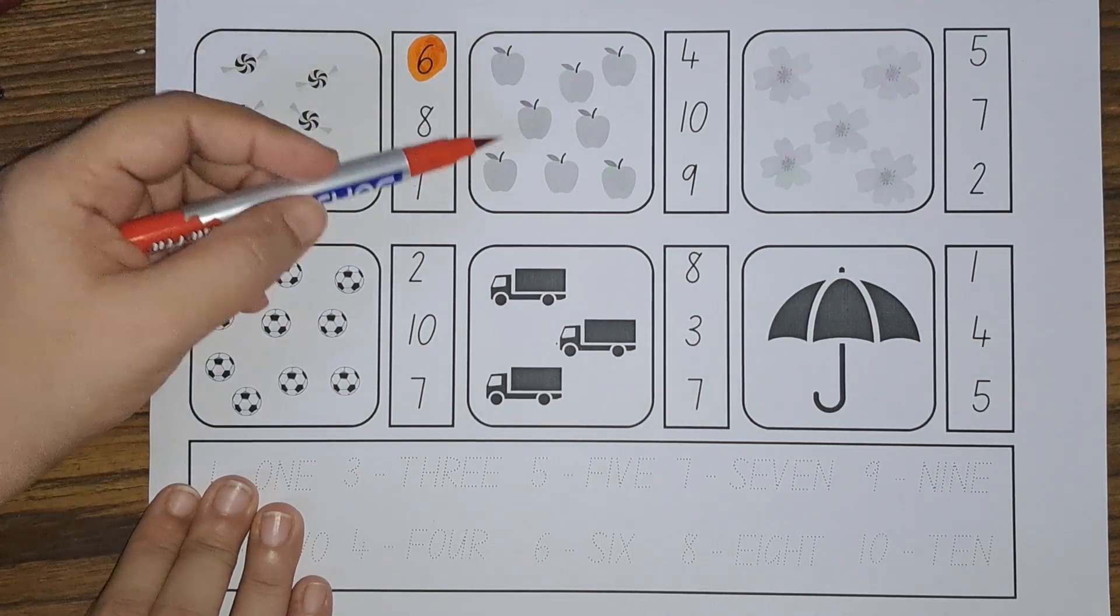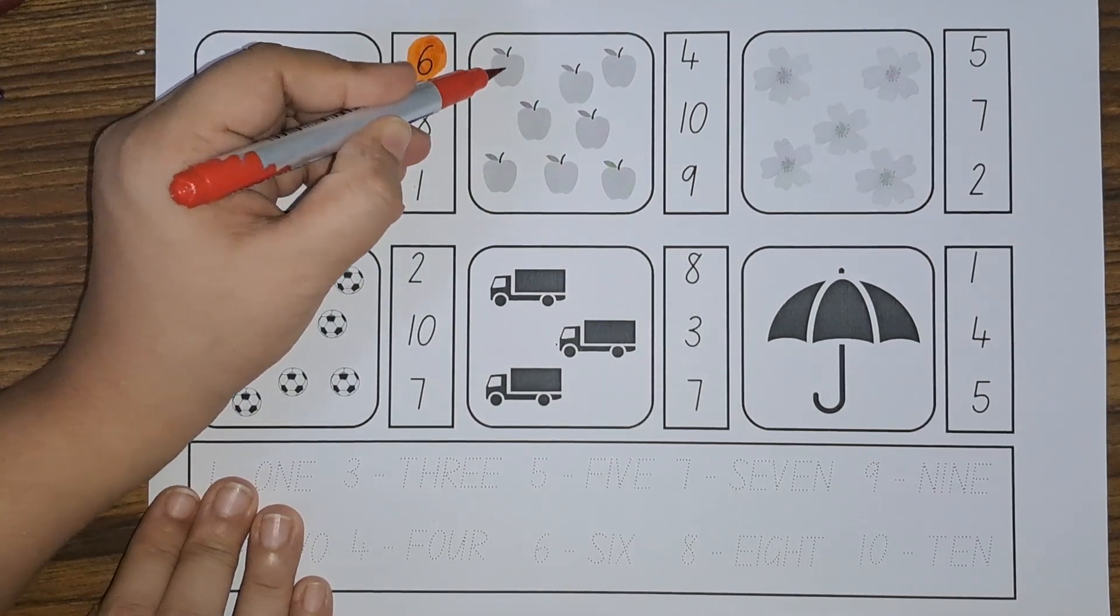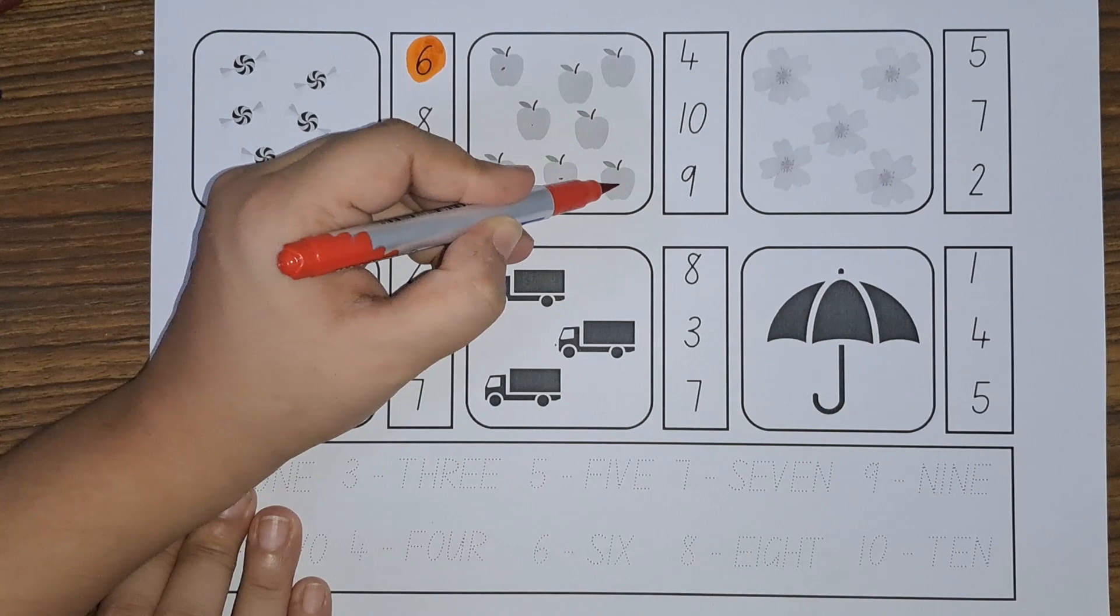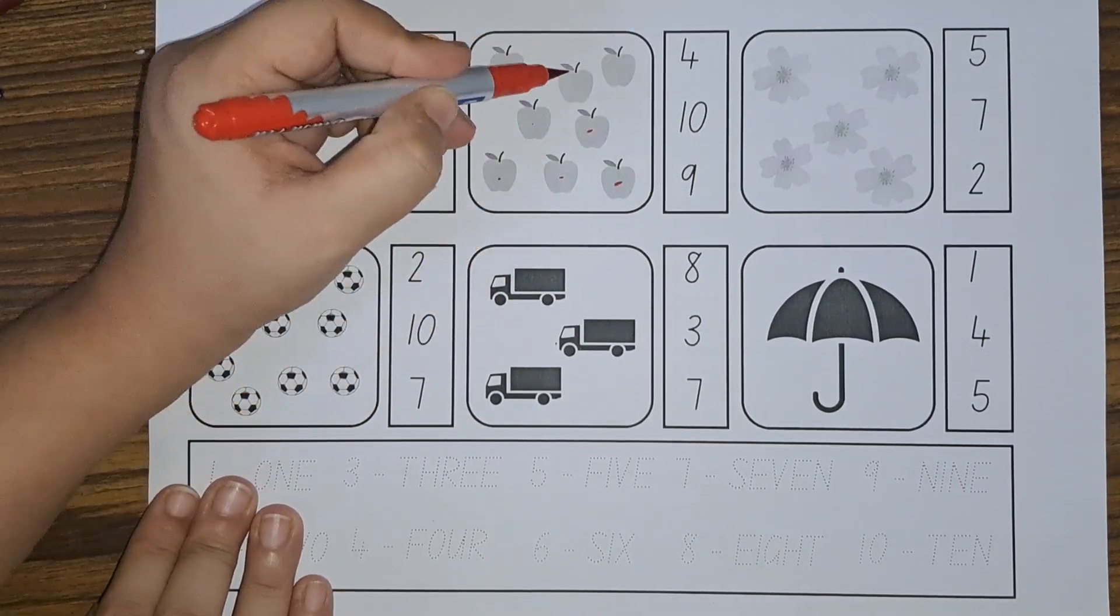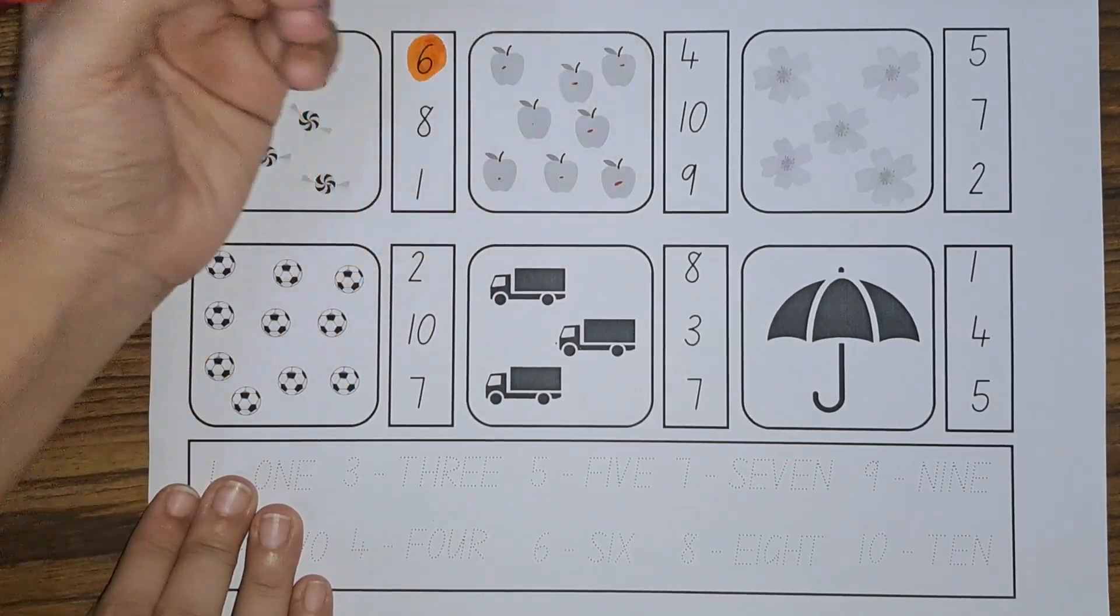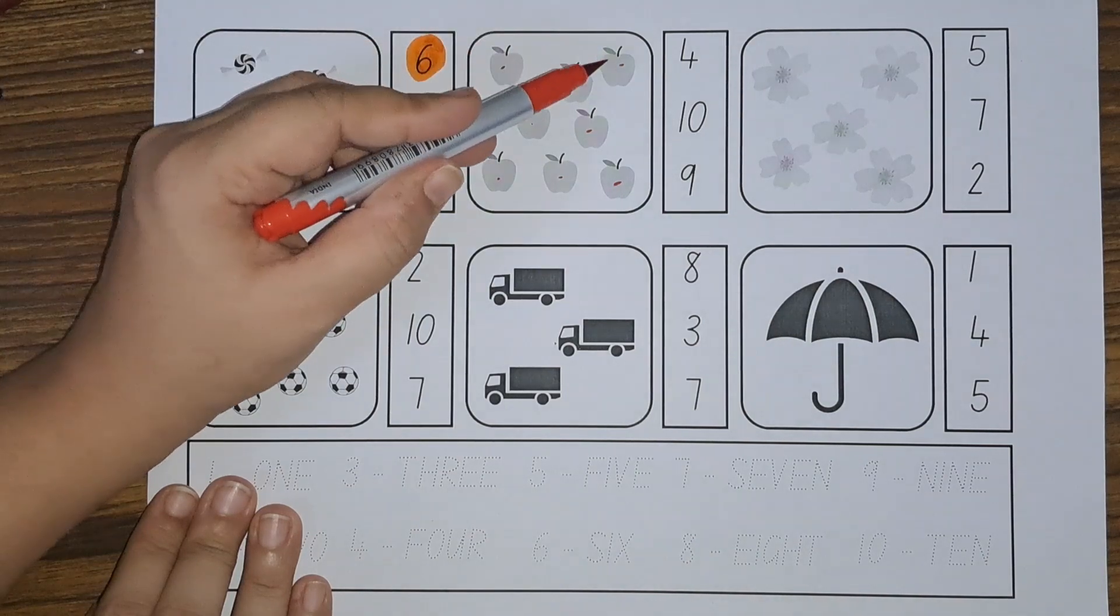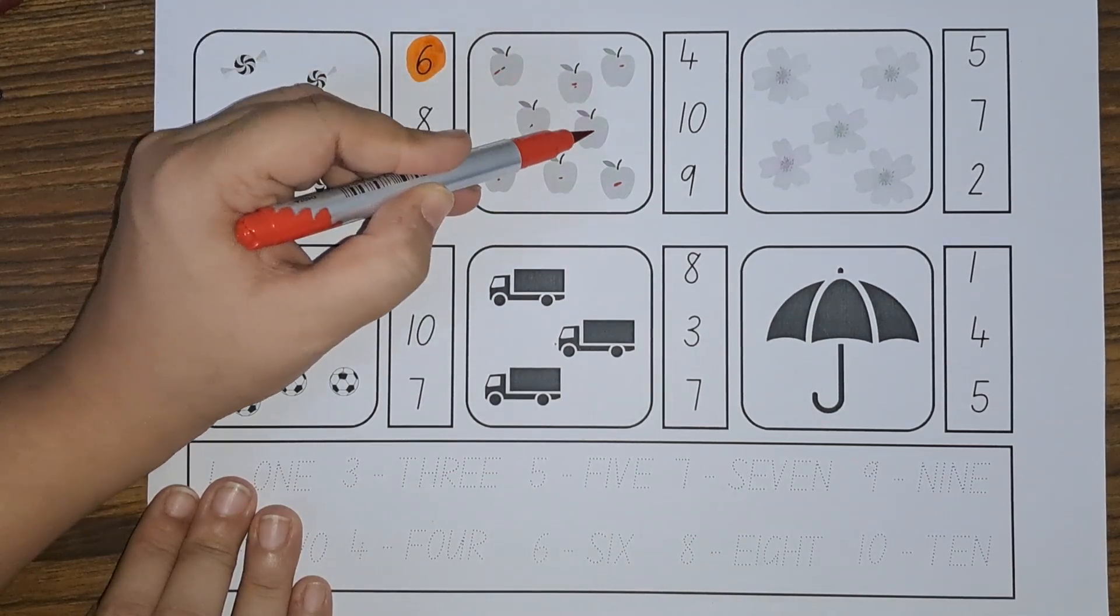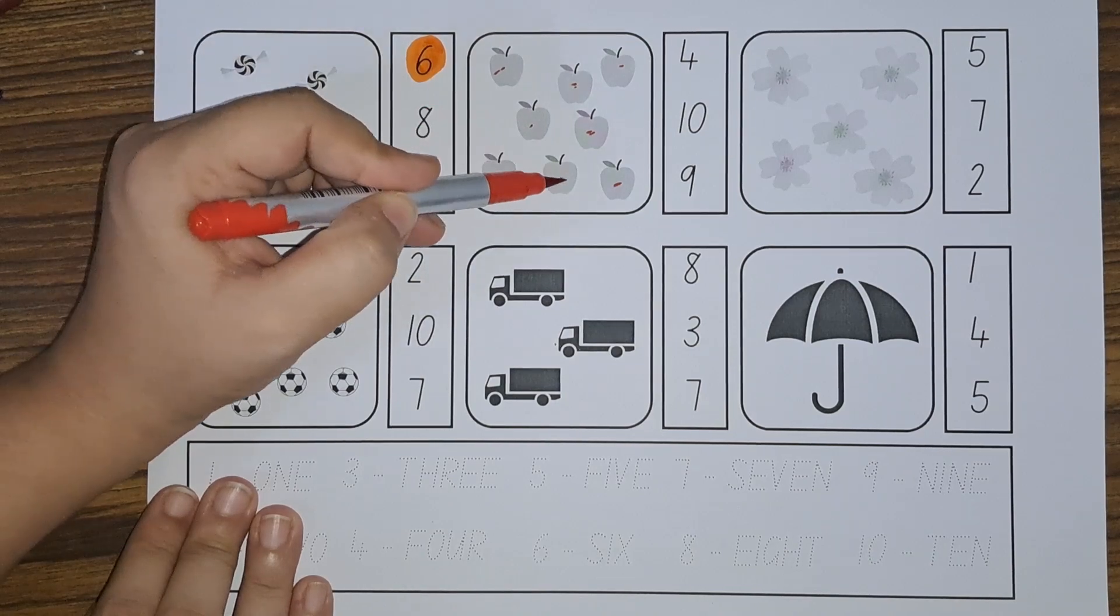Now let us count the apples next. One, two, three, four, five, six, seven, eight. We have eight apples. Let us circle eight.